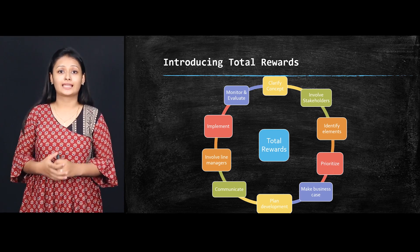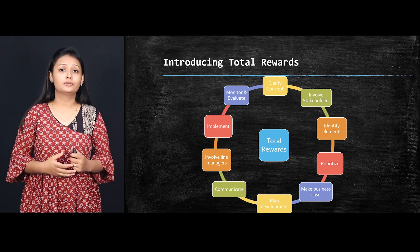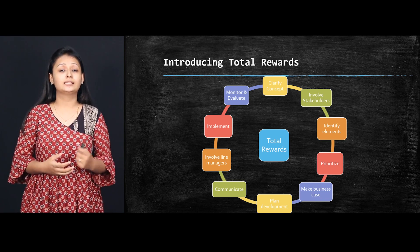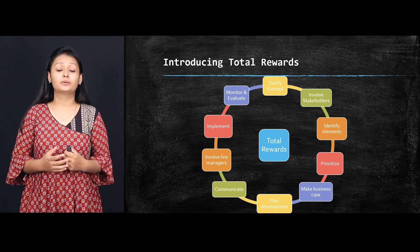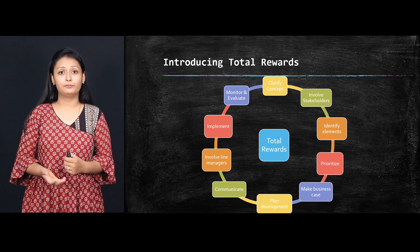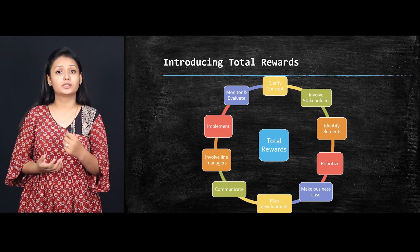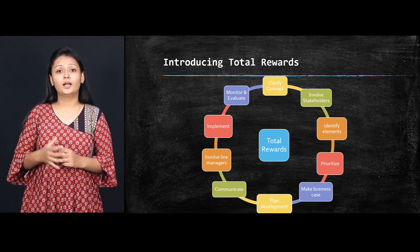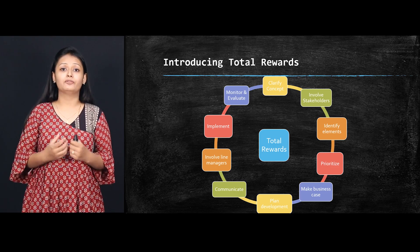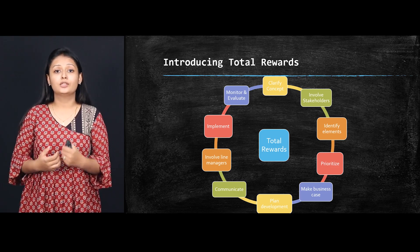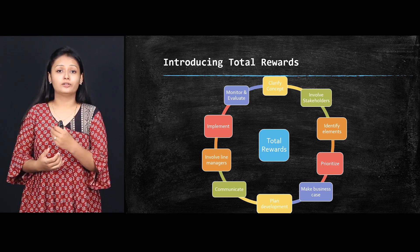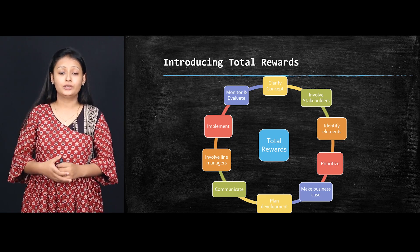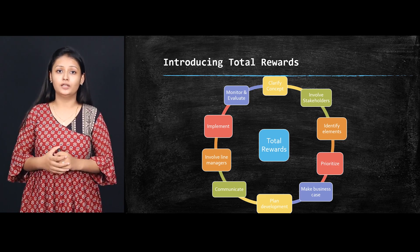The next step is to make a business case. You can revise grade and pay structures, introduce cultural values, norms, and beliefs, and analyze employee perspectives, attitudes, and behaviors toward the total reward approach. You need to introduce flexible benefits — providing a variety of choices so employees can choose rewards according to their nature and preferences and perform accordingly.